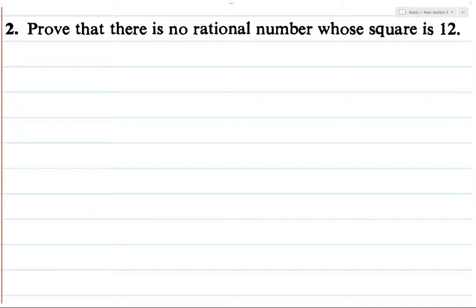So what you want to do for this problem is, if you're completely lost and you don't even know where to get started, you know that earlier in the chapter, the textbook proves that there's no rational number whose square is 2. What you should do is look at that proof and say: let's replace — instead of proving that there's no rational number whose square is 2, let's take that 2, replace it with 12, and see what else in the proof needs to change.